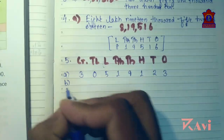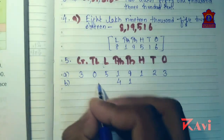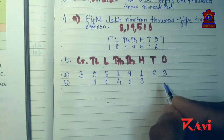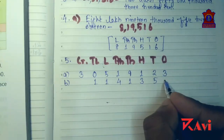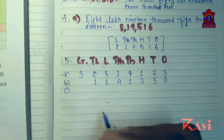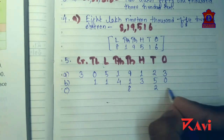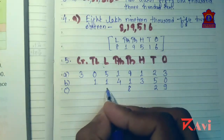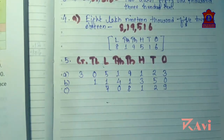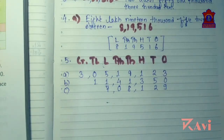Similarly, the next question: forty-one thousand, eleven lakh, three hundreds, five tens. Put them in their respective places — eleven lakh, forty-one thousand, three hundred, five tens — with zeros for missing places. For part c: eight thousand at thousands place, two tens, nine ones, seven lakhs, one hundred, with zeros for missing places. Put commas so you can read it easily.